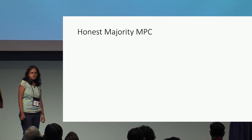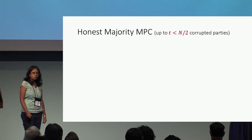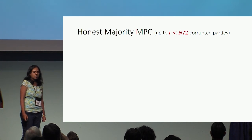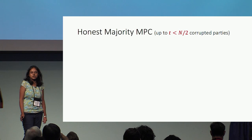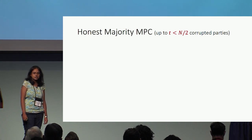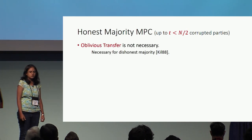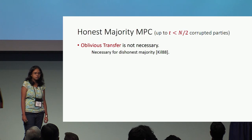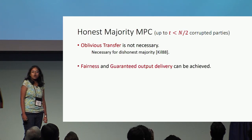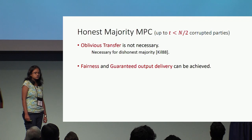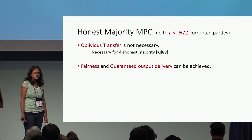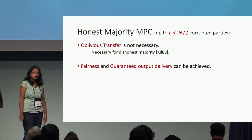Our focus here is mainly on the Honest Majority setting, where the adversary is allowed to corrupt up to t less than n/2 parties. Honest Majority MPC has been studied since the 80s, and there are a couple of reasons that make it an interesting area of study. Firstly, oblivious transfer is not necessary for achieving Honest Majority MPC. Also, it allows for stronger security notions such as fairness and guaranteed output delivery, which are impossible to achieve in the dishonest majority setting.